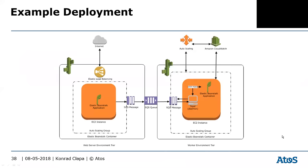This diagram from AWS documentation perfectly shows what Elastic Beanstalk can do. The web server can be part of an Auto Scaling group so you can scale it depending on a number of parameters, just as standard Auto Scaling does.